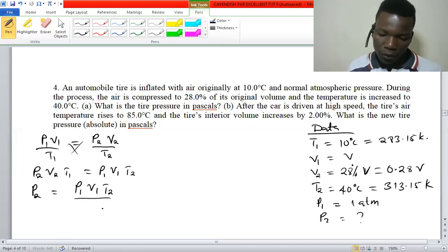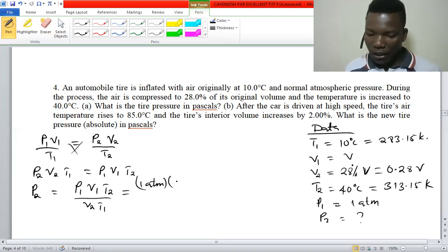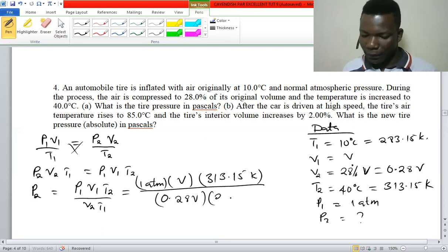We can plug in: one atmosphere, V1 is V, the final temperature is 313.15 K, divided by the final volume 0.28 V and temperature 283.15 K.